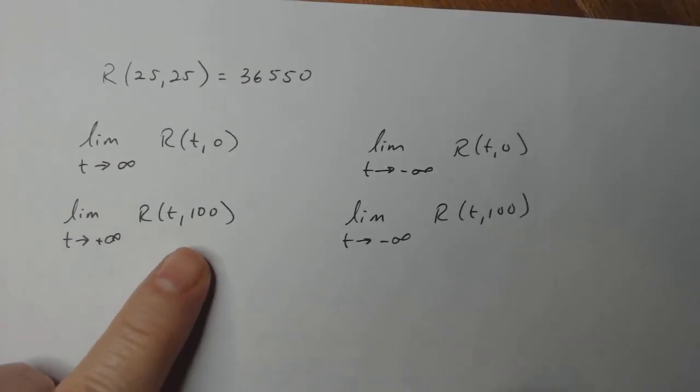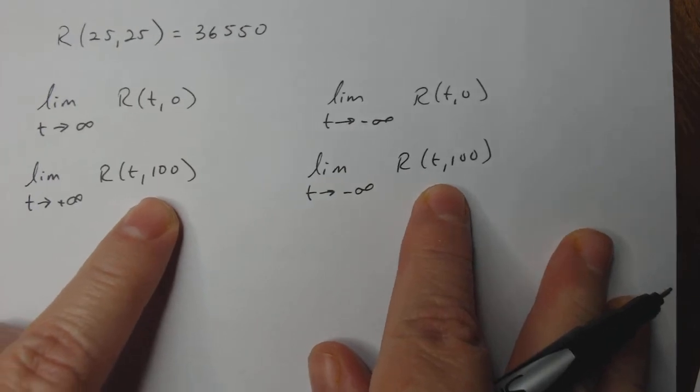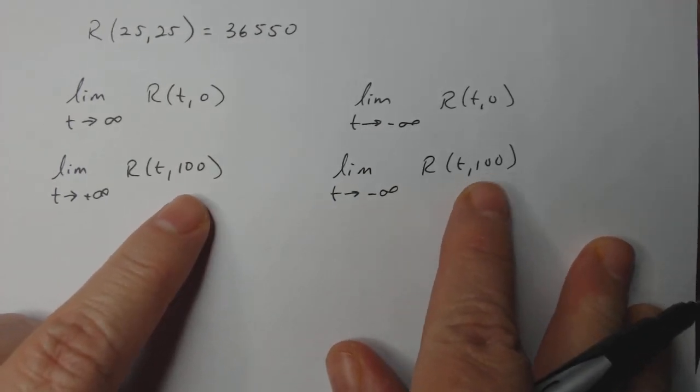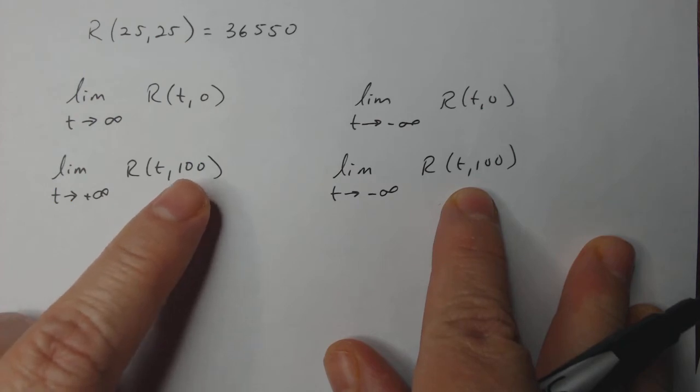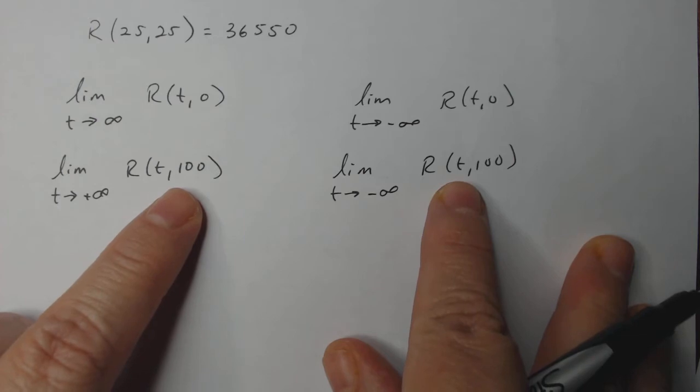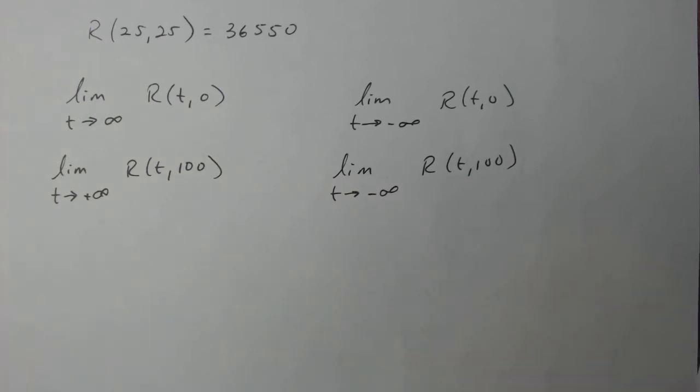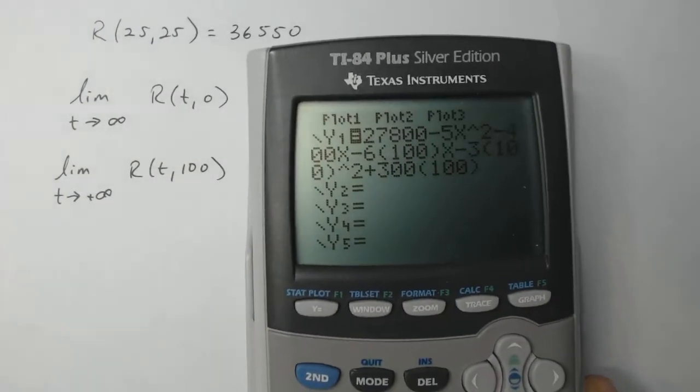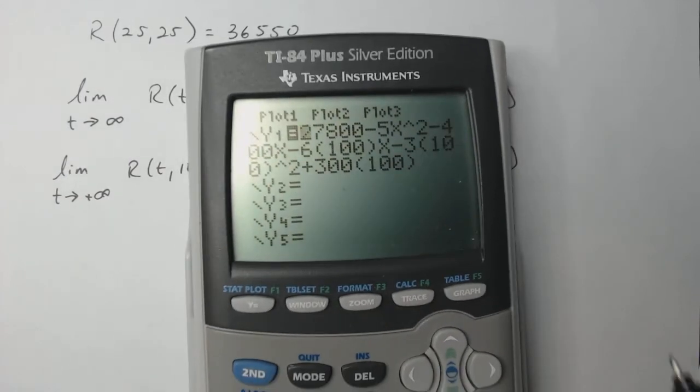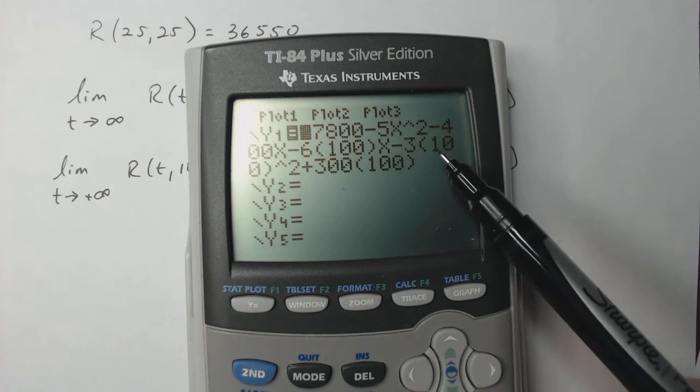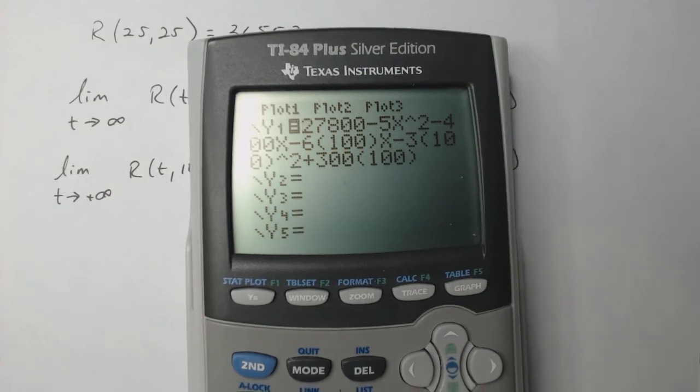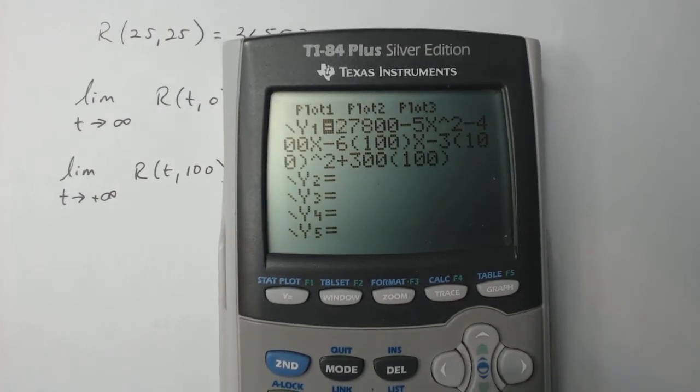I'm going to start with these two because I started this video before and had a typo. So I'm typing in my range function with H equaling 100 and T being a variable, and then I'm going to look at the limits. Here I have it in my calculator. You can see I have my variables for T and then the constants for the H variable in there. Now I want to look at the table.